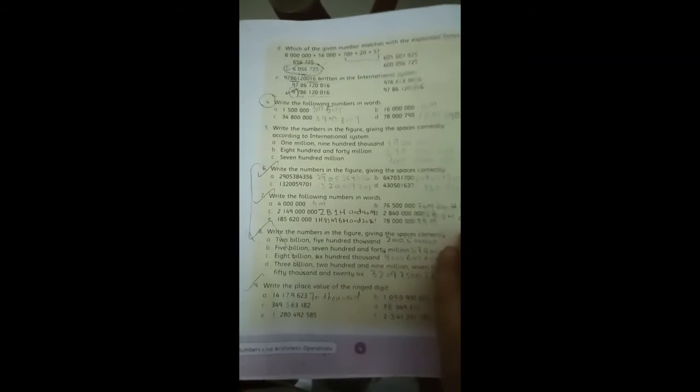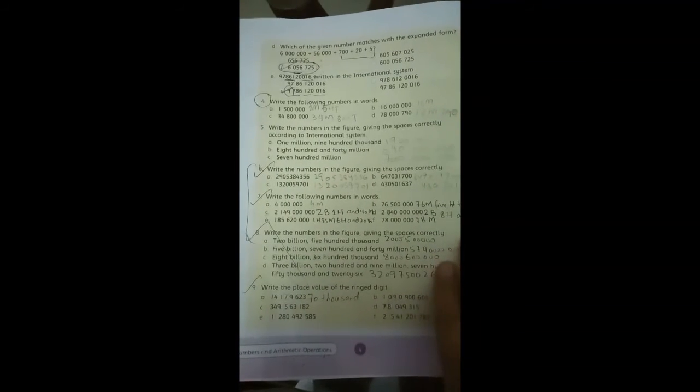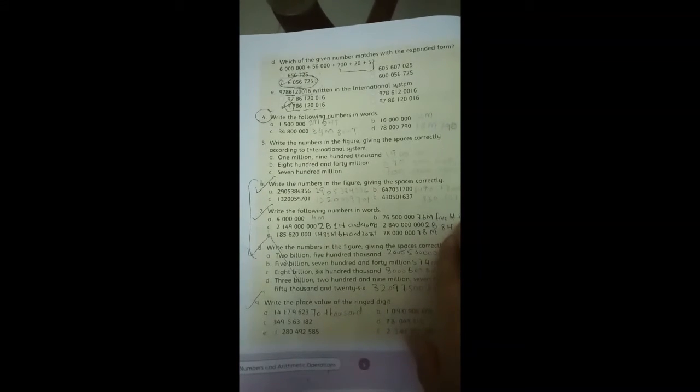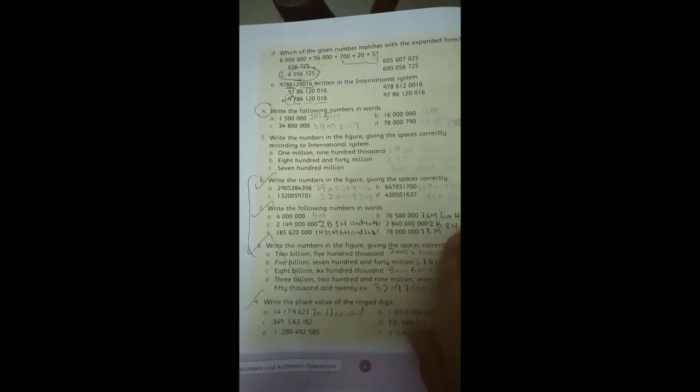If it is 6 million you will write 6 million, and if it is 600,000 you will write 600,000. How do you write 6,725,000? You will see here 6 million plus 725,000.